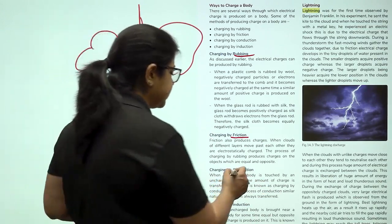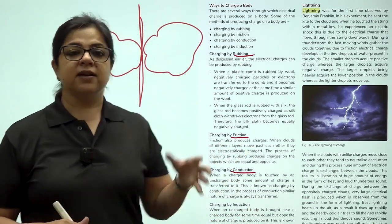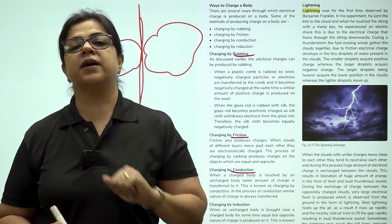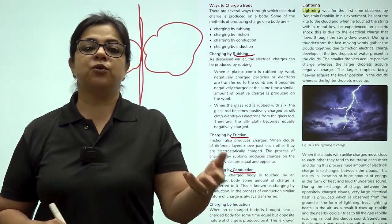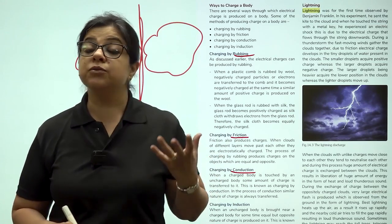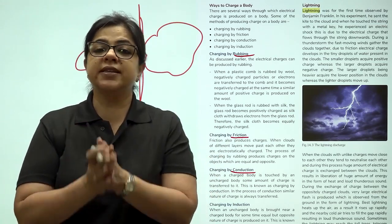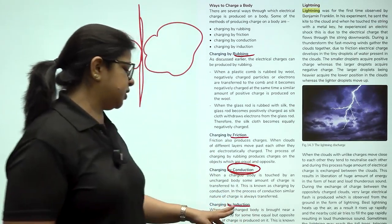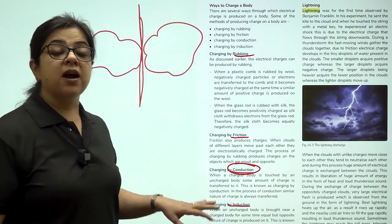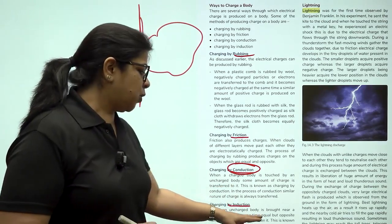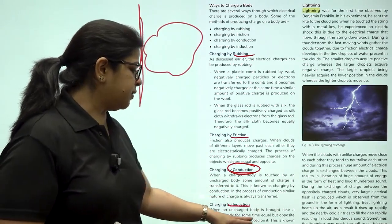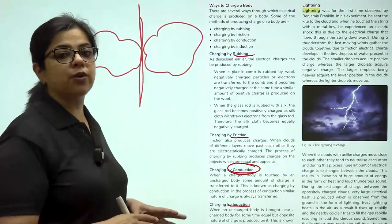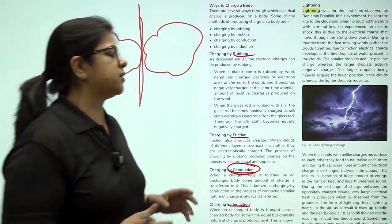Because of this friction there is either loss of electrons by one or gain of electrons by one of them. Next is conduction. Just like if you hold a hot pan in your hand, your hand also becomes hot. Similarly, if you hold a charged body you will also become charged. This is charging by touch or by conduction. Then there is charging by induction. When an uncharged body is brought near a charged body for some time, equal but opposite nature of charge is produced on it. You just have to bring the bodies near each other.